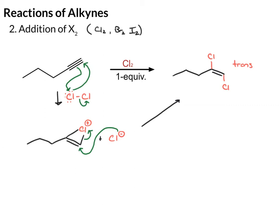Now, if you do want to end up with a tetrahalogenated alkane, we can add a second equivalent of Cl2. So you can start from this product and add a second equivalent of Cl2, and that will add a chlorine and chlorine across the double bond. So now we go from the alkene to the alkane — we still have the chlorines from before, and now we have two more chlorines on the product.